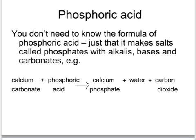For phosphoric acid, we don't need to know its formula. We just need to be able to balance equations using phosphoric acid to make the salt, which is called a phosphate. For example, calcium carbonate reacts with phosphoric acid to make calcium phosphate, water, and carbon dioxide. Similarly, sodium carbonate would react with phosphoric acid to make sodium phosphate, water, and carbon dioxide.